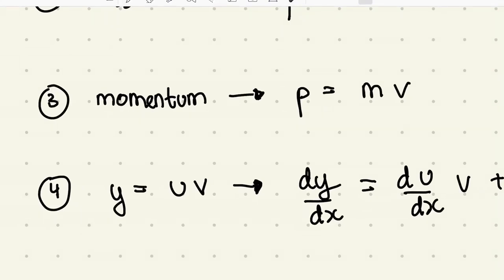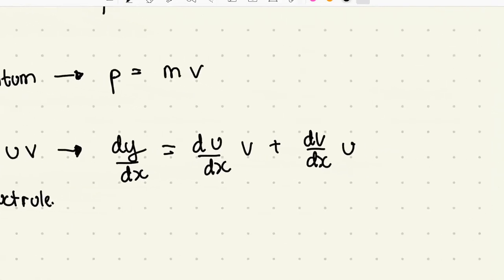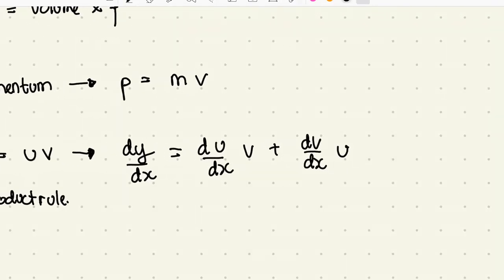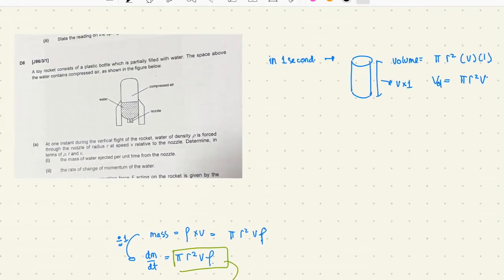Momentum. The symbol of momentum is p, and the formula is mass times velocity. And number four, we need to use a little bit of differentiation. This is called product rule. If y equals u times v, then dy/dx equals du/dx times v plus dv/dx times u. We need to use that later.